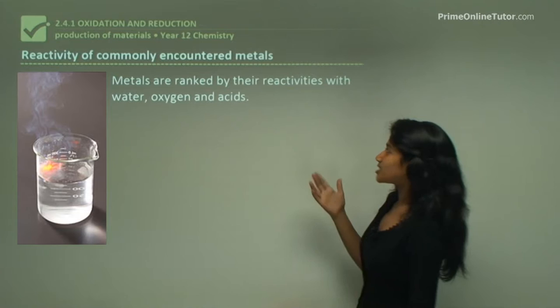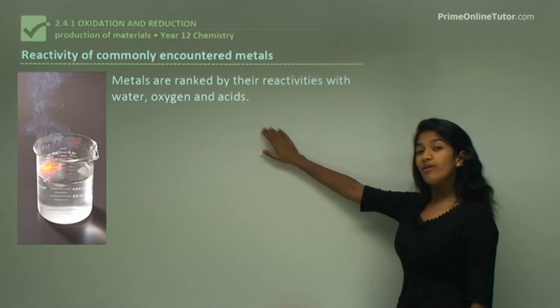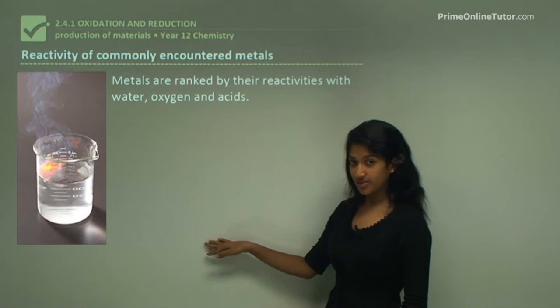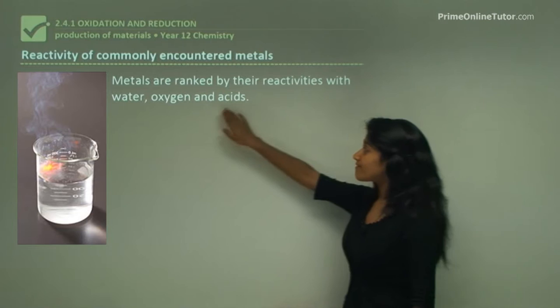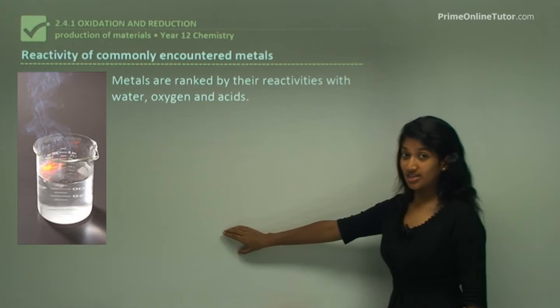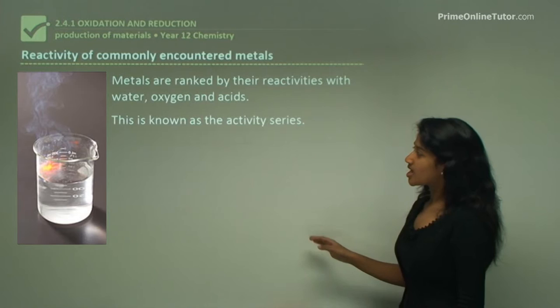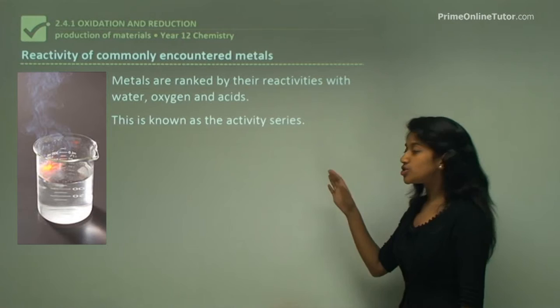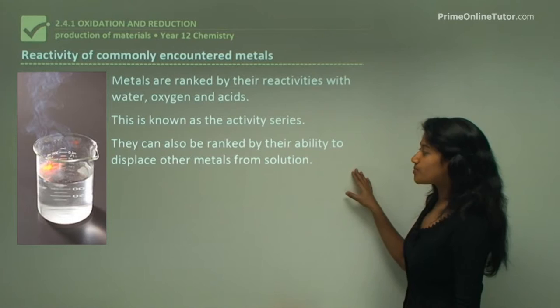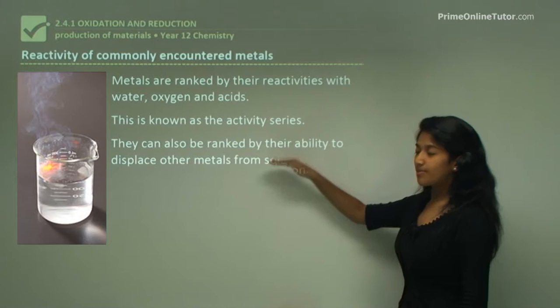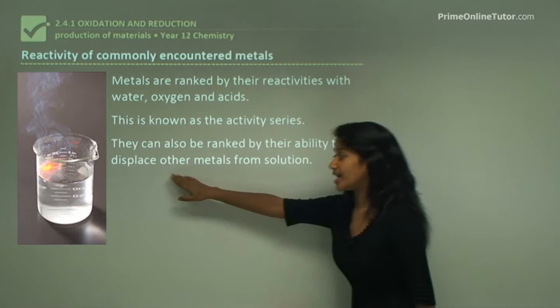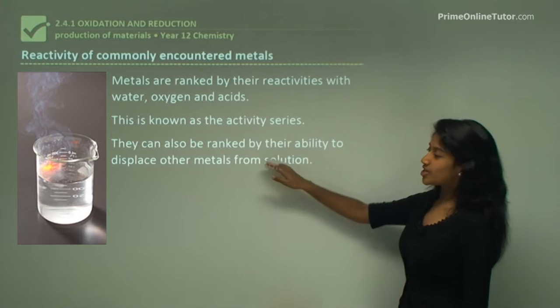Metals are ranked by their reactivities with water, oxygen, and acids. Metals that react with all three are very reactive; those reacting with water and acids are mildly reactive; those reacting with only acids are somewhat reactive; and inert ones like gold, copper, and silver don't react with any. This is known as the activity series, found at the back of the periodic table. Metals can also be ranked by their ability to displace other metals from solution - the more active they are, the greater their tendency to displace other metals.